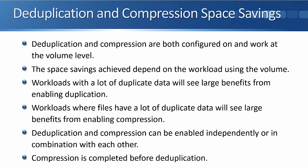Deduplication and compression are both configured on and work at the volume level, so this can affect how you design your volumes. If you've got duplicate data but it's in different volumes, you're not going to get the deduplication savings — the blocks have to be in the same volume. Space savings depend on the workload. Workloads with a lot of duplicate data at the block level will see large benefits from deduplication; workloads where files have a lot of redundant data will see large benefits from compression. Both can be enabled independently or together.